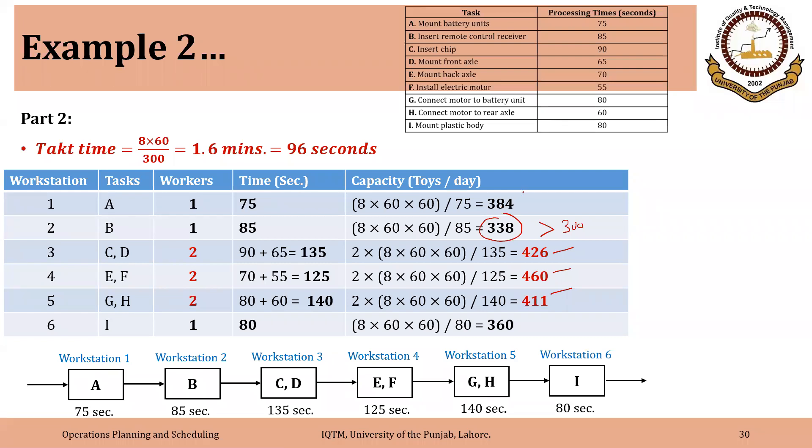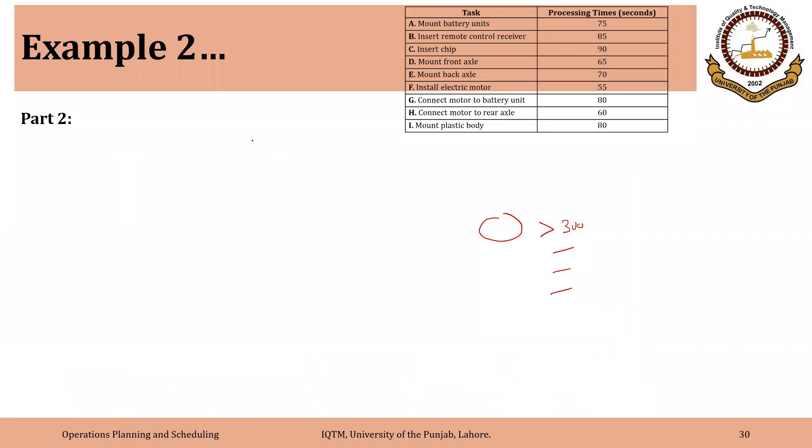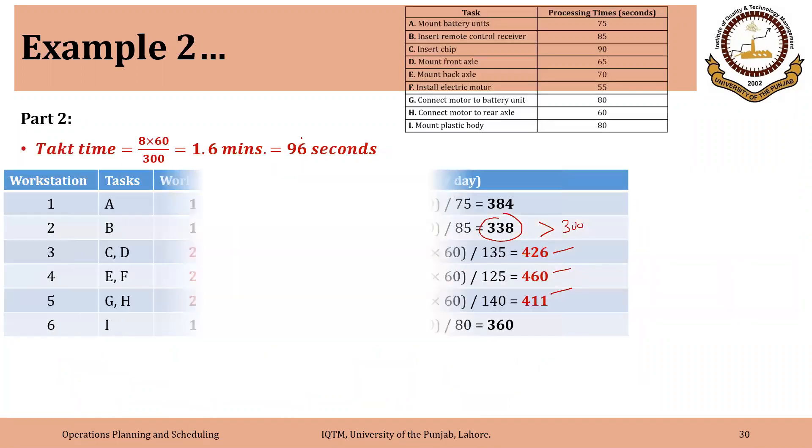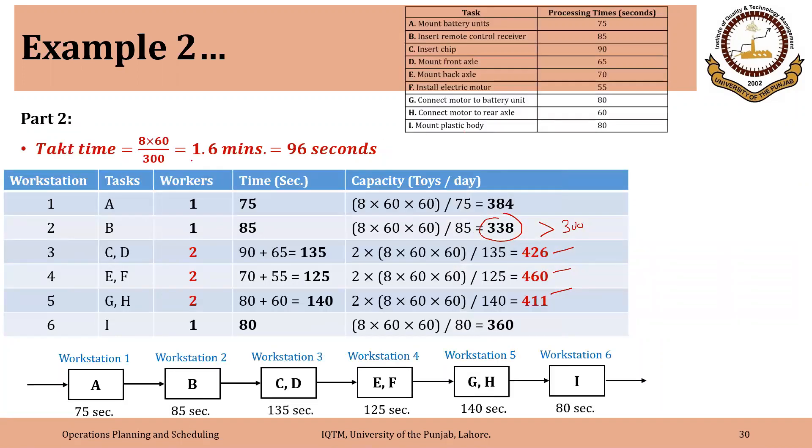In fact, we will have some time and we will either have some ideal time or we will have some overproduction. And you should have noticed that for a demand of 200, the takt time was 144 seconds. And as the demand has increased, the takt time has reduced. So in this case, we have to add resources to different workstations to increase the capacity.